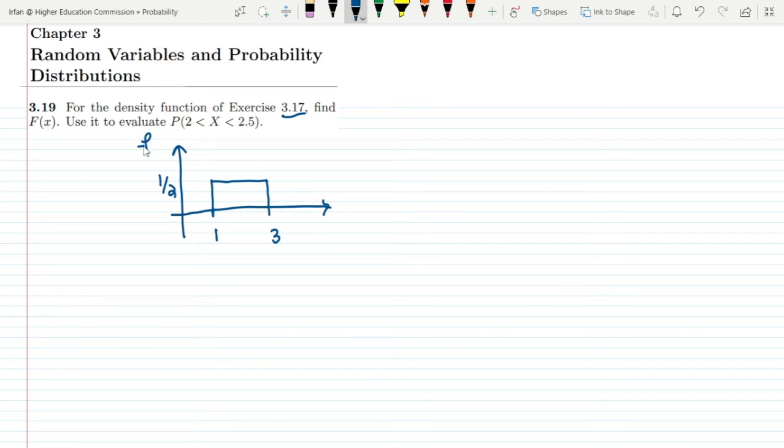And within this range it has a constant value which is 1/2. So this is for f(x) and this is x.